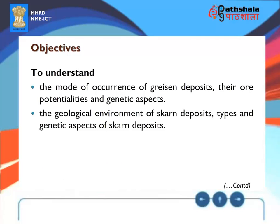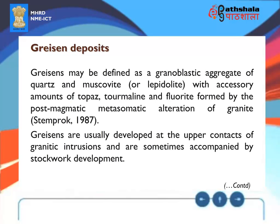Objectives: To understand the mode of occurrence of Greisen deposits, their ore potentialities and genetic aspects, the geological environment of skarn deposits, and types and genetic aspects of skarn deposits. Greisens may be defined as a granoblastic aggregate of quartz and muscovite or lepidolite, with accessory amounts of topaz, tourmaline and fluorite, formed by the post-magmatic metasomatic alteration of granite (Stemprok 1987). Greisens are usually developed at the upper contacts of granitic intrusions and are sometimes accompanied by stockwork development.